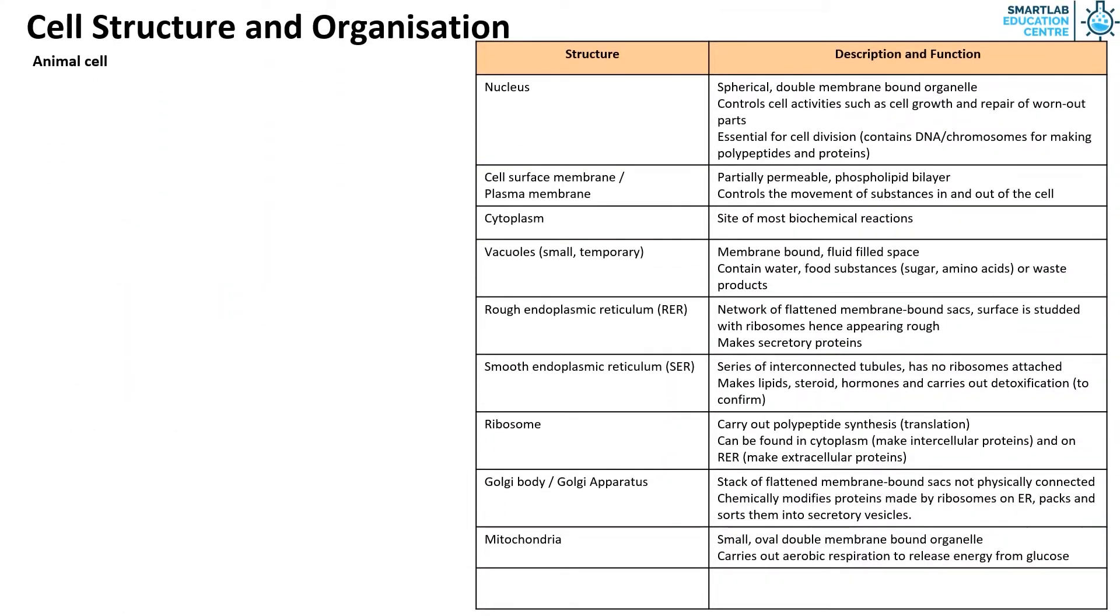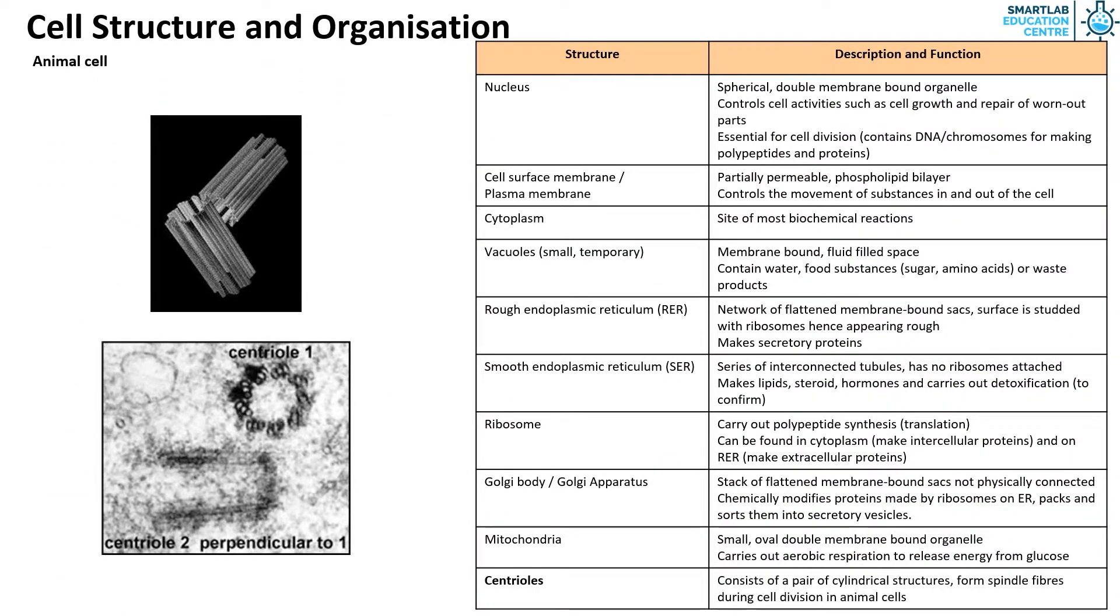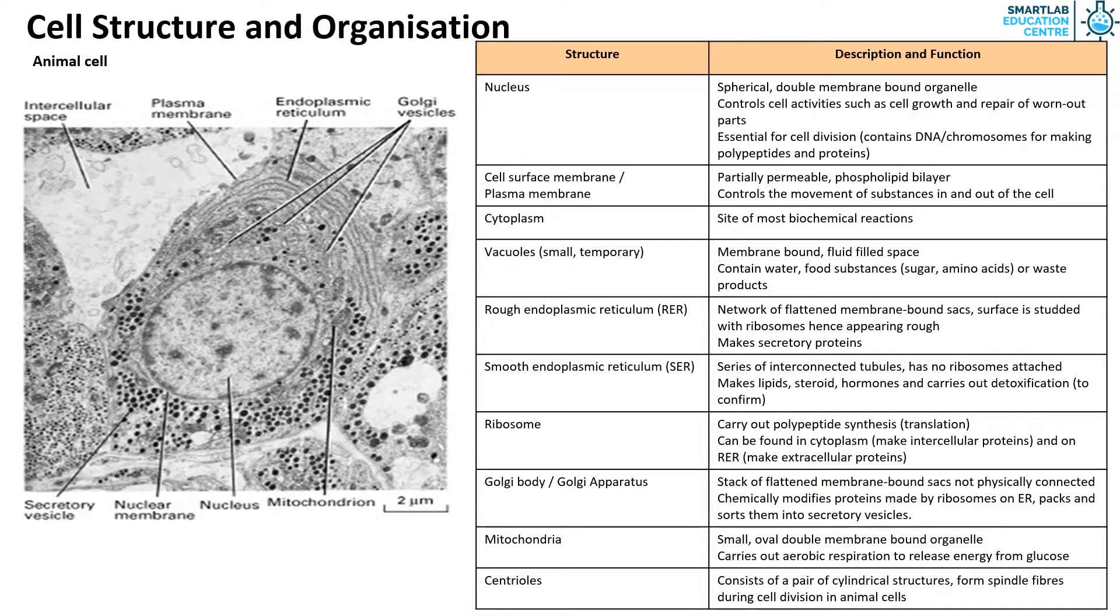Lastly, the centrioles consist of a pair of cylindrical structures to form spindle fibers during cell division in animal cells. This is an electron micrograph of an animal cell.